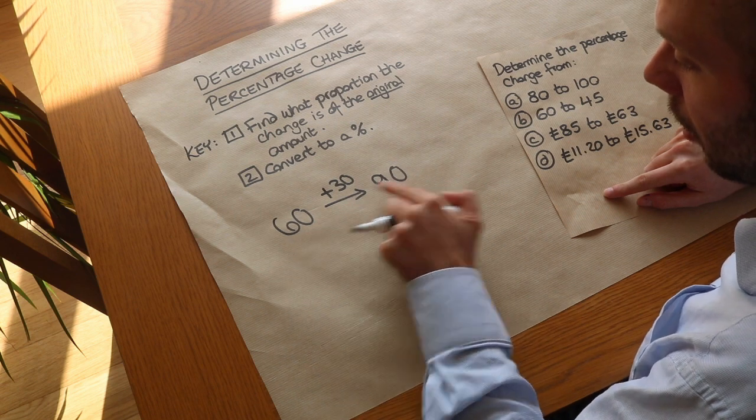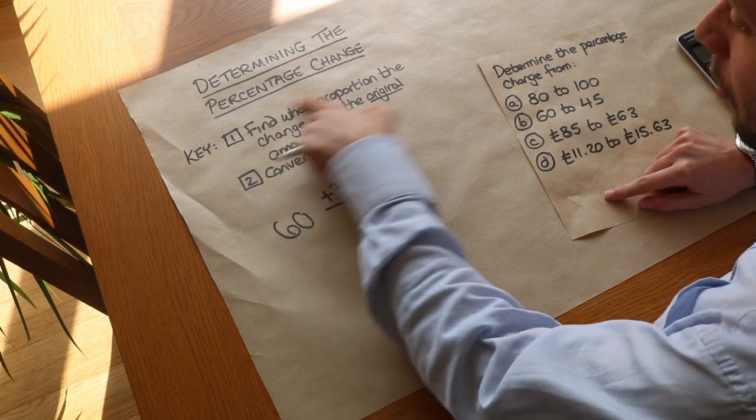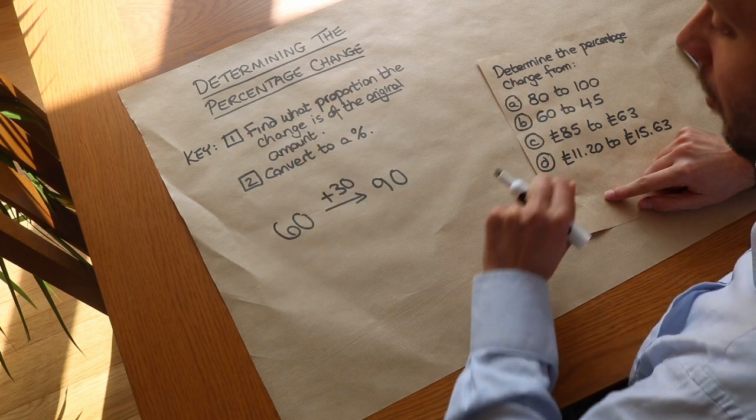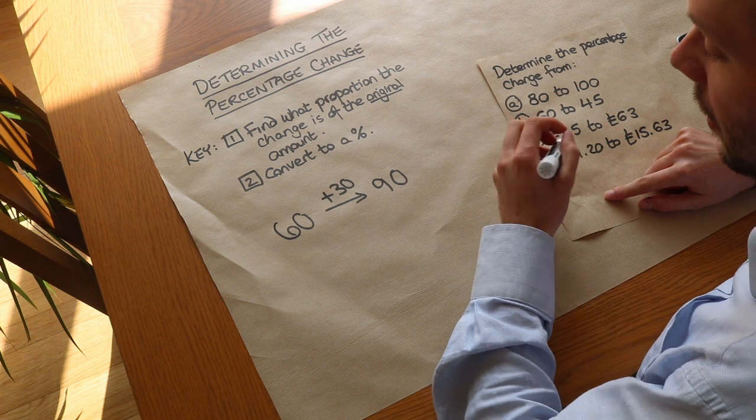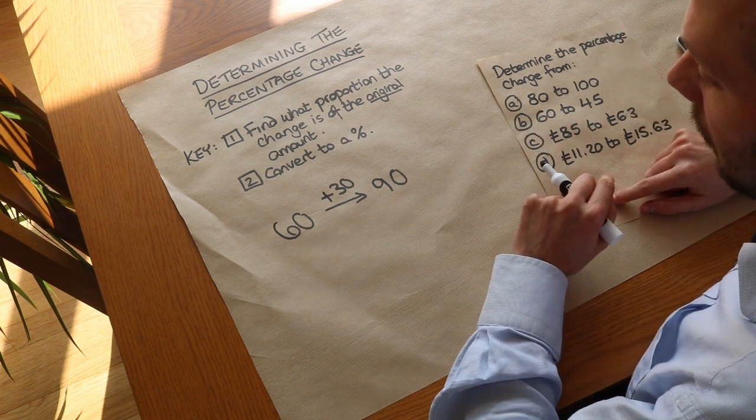So it's increasing by half to get from 60 to 90. We've done part one - what proportion is it? Half. And then we convert that proportion to a percentage. Now half is 50 percent, so that change we can see is 50 percent.